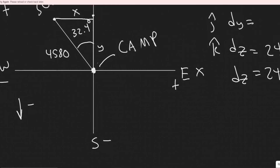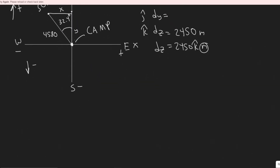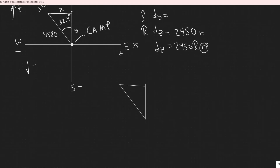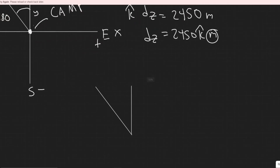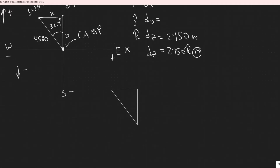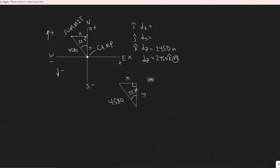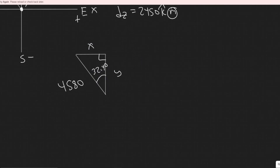I want you to imagine it as a right triangle. Redrawing that triangle: we have a 90-degree angle, the angle of 32.4 degrees, and the hypotenuse of 4,580 meters. The two legs of the triangle correspond to the y and x components of the horizontal displacement.